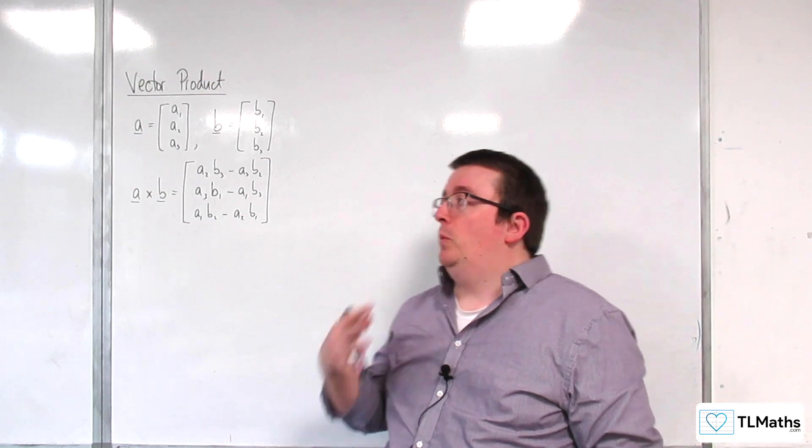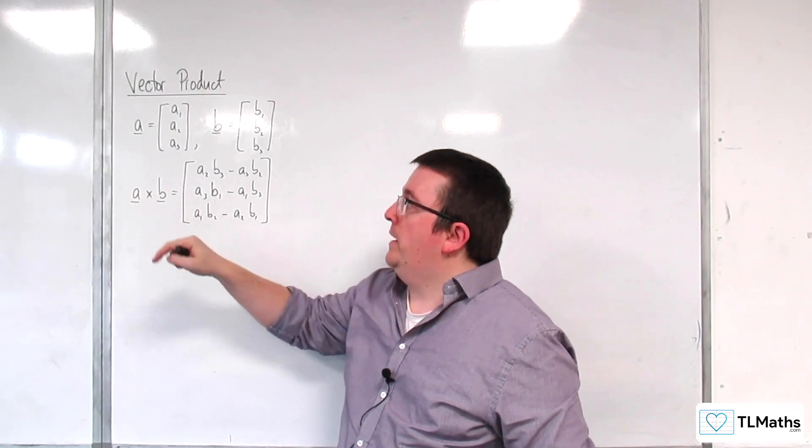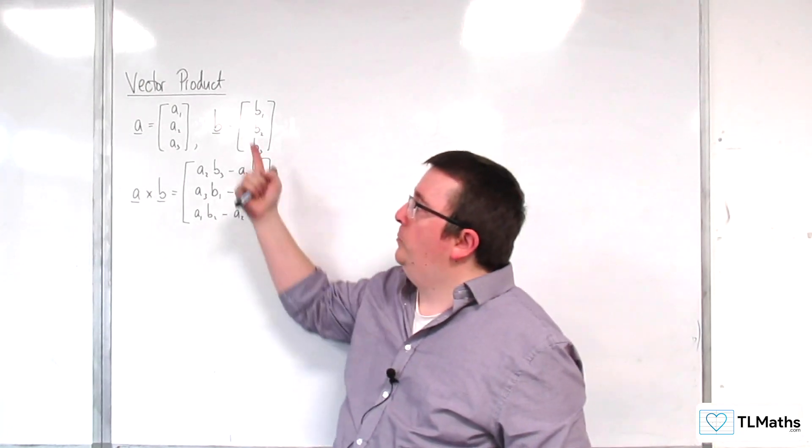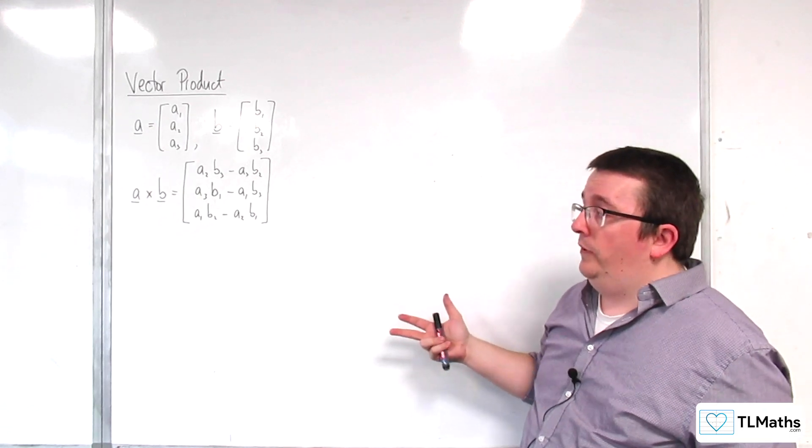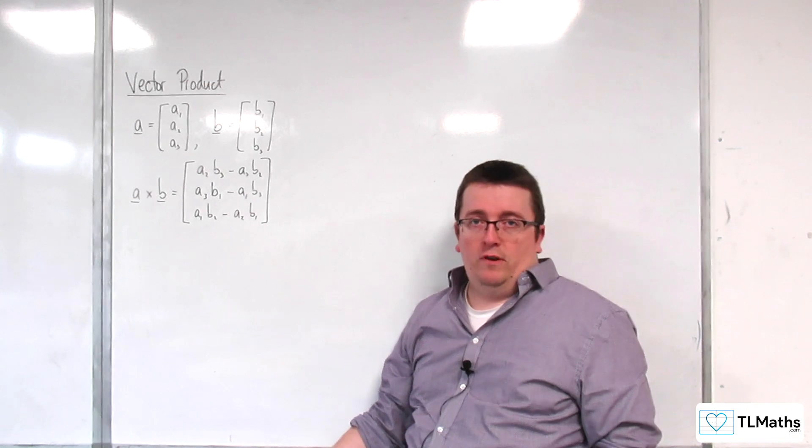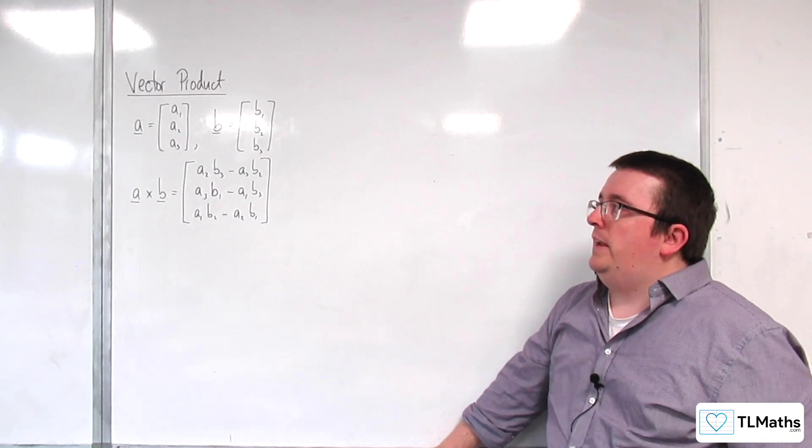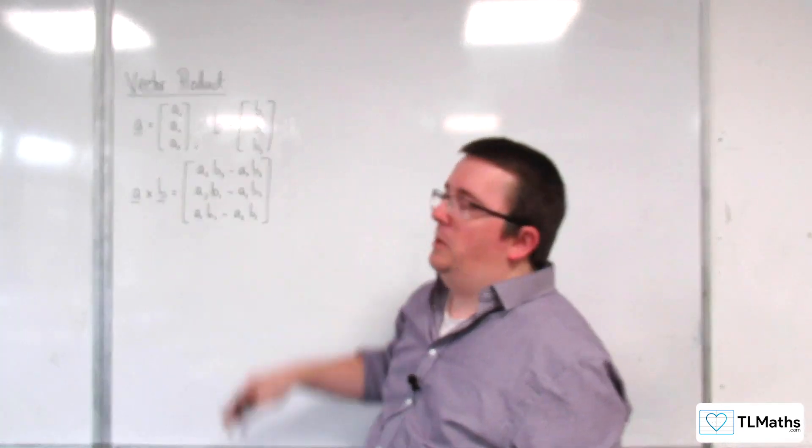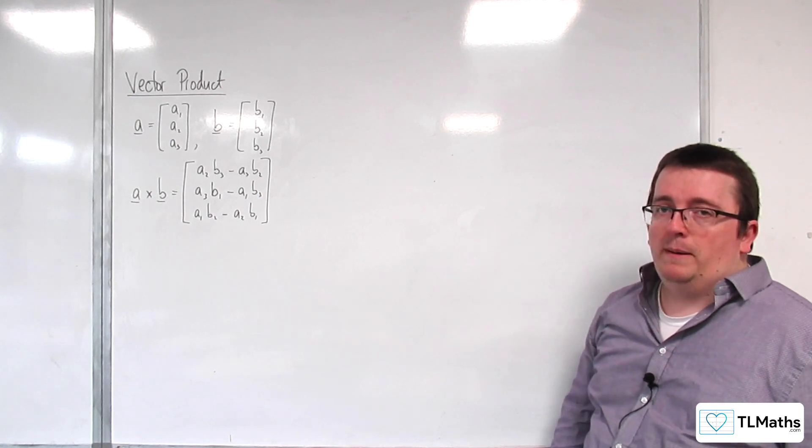So, in the previous video, we were introduced to the vector product, A cross B, which is this vector here. This is a vector that is perpendicular to both A and B. But as it stands, this probably isn't something that you would like to memorize. It's a bit unwieldy just to have your A and your B, and then substitute into this. It's a bit of a messy thing to try and remember.